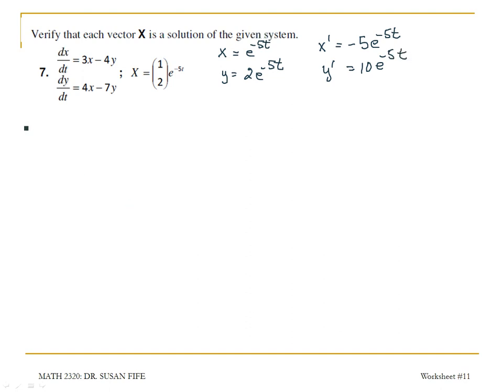My first equation, dx/dt equals 3x minus 4y, gives me dx/dt, which is negative 5e to the negative 5t, equals 3 times x, or 3 times e to the negative 5t,